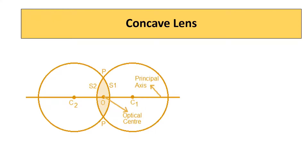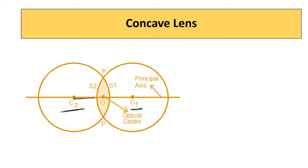I hope you remember the spherical mirrors we learned in part 4 — we are going to learn something similar to that. This convex lens is a part of two spheres. Let C1 be the center of curvature of one sphere and C2 be the center of curvature of the other sphere. The line joining these two centers of curvature is known as the principal axis. The center of the lens is known as the optical center.